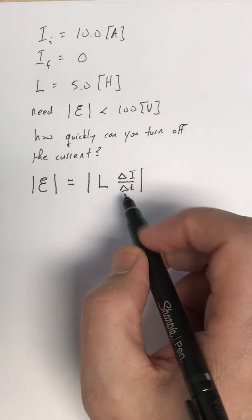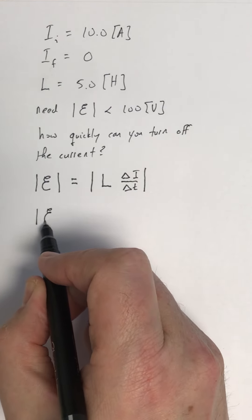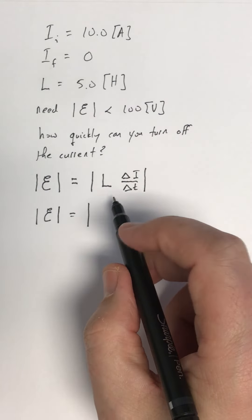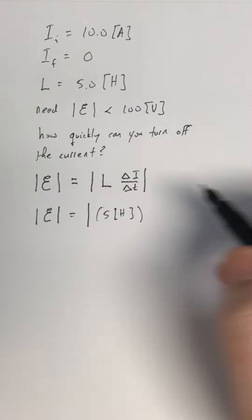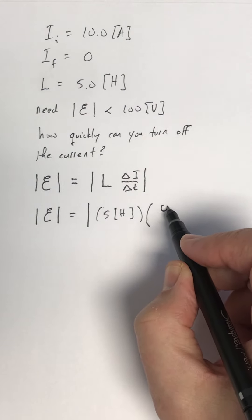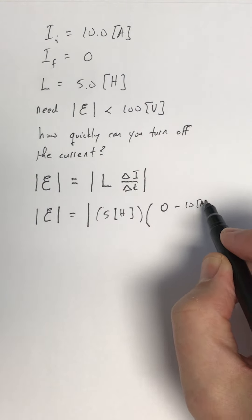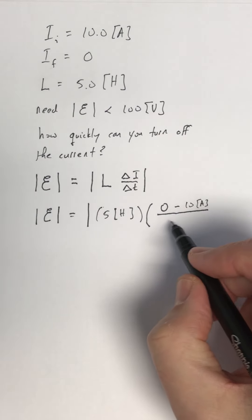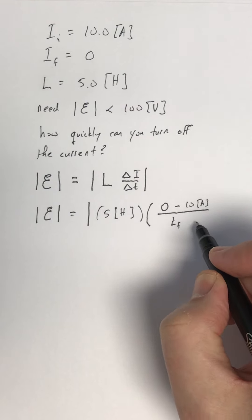Plugging in what we have for the time rate of change of the current, we're going to have the magnitude of the induced EMF is going to be 5 Henrys and we have I final is 0 minus I initial is 10 amps, and then the denominator will have T final minus T initial, but I'll take T initial to just be 0. So that's T final.